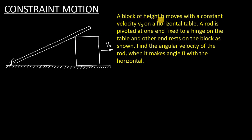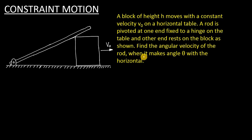A block of height h moves with a constant velocity v0 on a horizontal table. A rod is pivoted at one end fixed to a hinge on the table. Here is the hinge, and the other end rests on the block as shown here. Find the angular velocity of the rod when it makes angle theta with the horizontal.